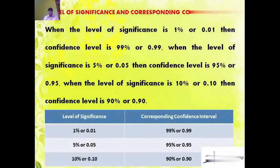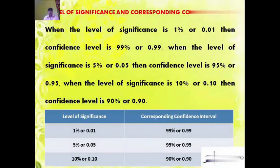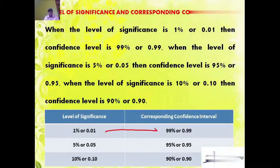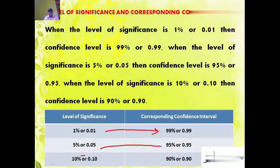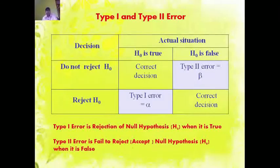When the level of significance is 1% or 0.01, the confidence level is 99% or 0.99. When the level of significance is 5% or 0.05, the confidence level is 95% or 0.95. When the level of significance is 10% or 0.10, the confidence level is 90%.